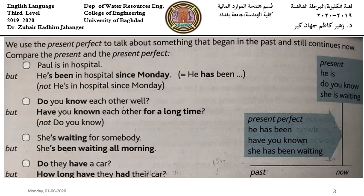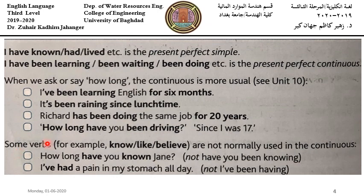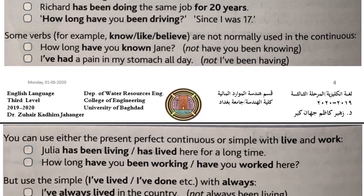Some verbs — for example, 'know,' 'like,' 'believe' — are not normally used in the continuous form. For example: 'how long have you known Jane?' — not 'have you been knowing Jane?' That sounds wrong. Similarly: 'I've had a pain in my stomach all day' — not 'I've been having.' Keep in mind that 'know,' 'like,' and 'believe' are not normally used in the continuous.